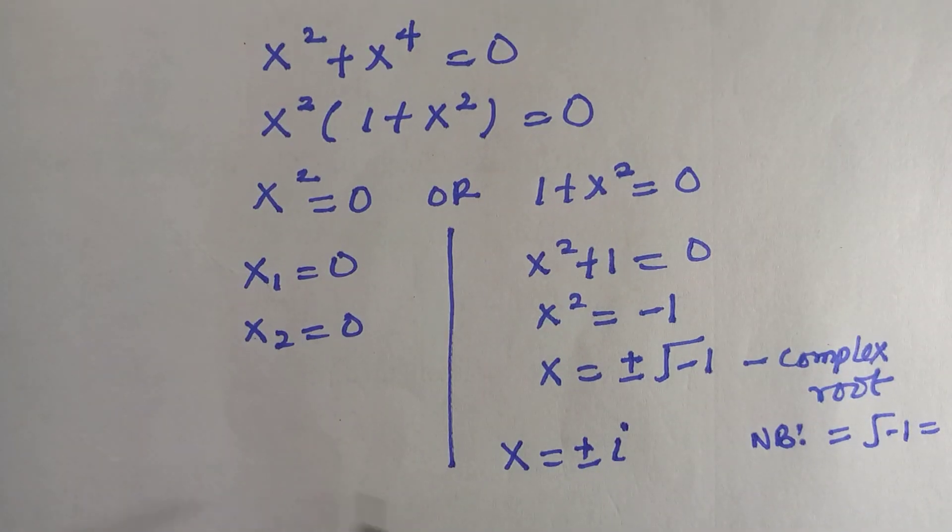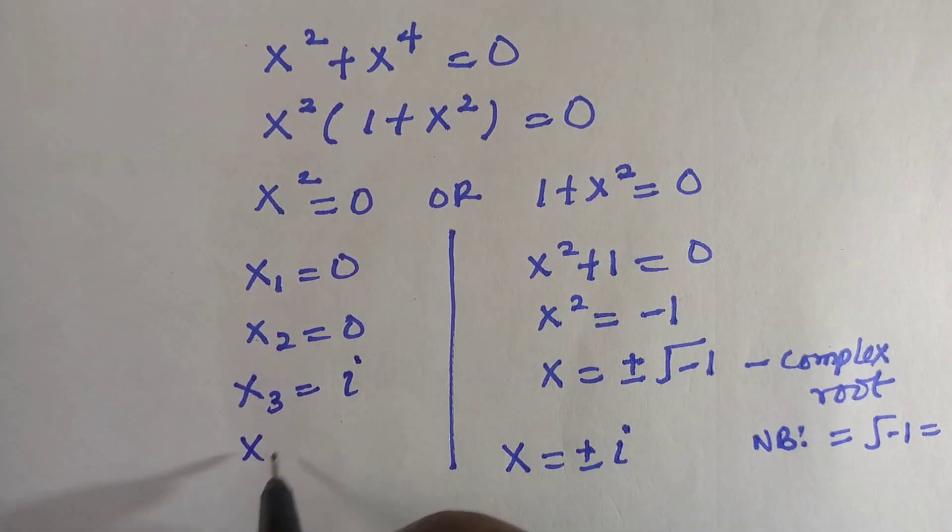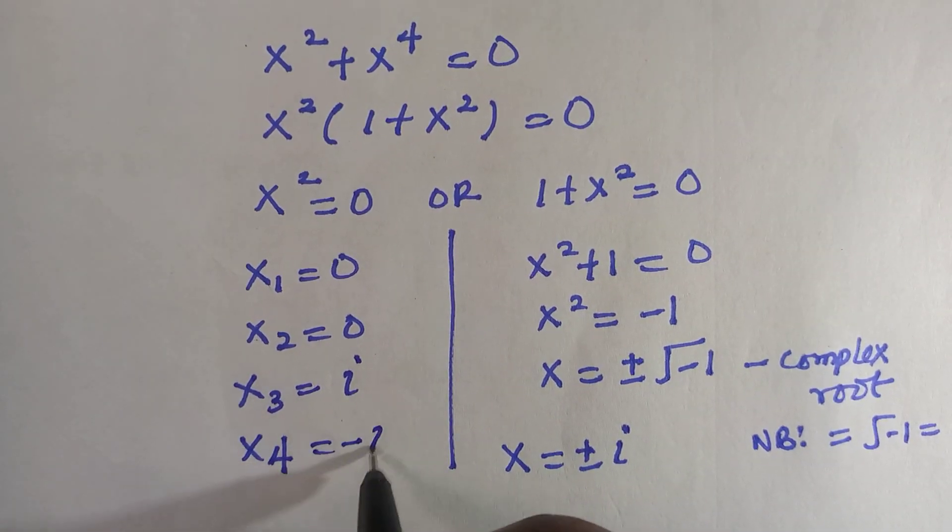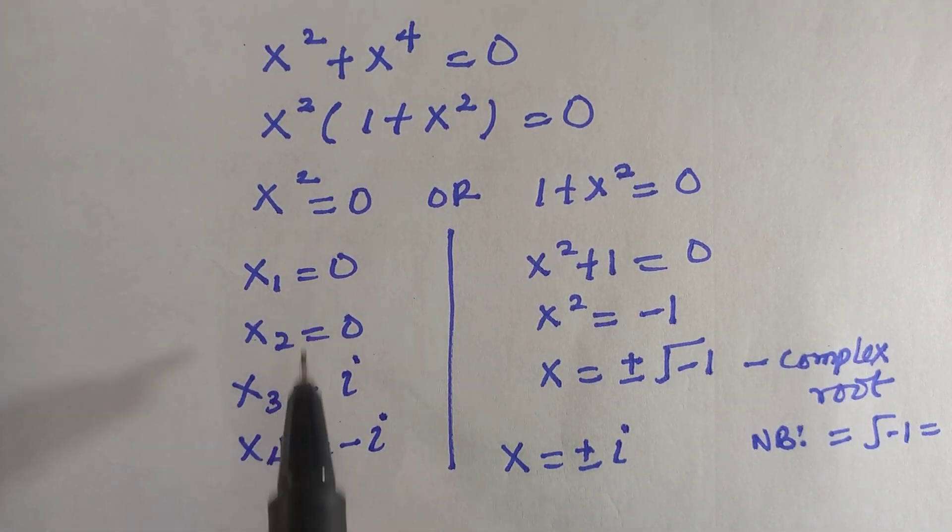And I have obtained x1 and x2 before, so which means x3 is i, which is positive, or x4, which is negative i. And here are the 4 roots of this equation.